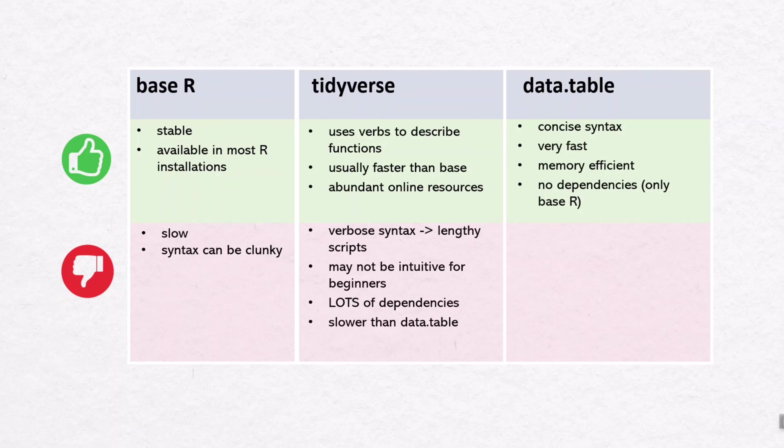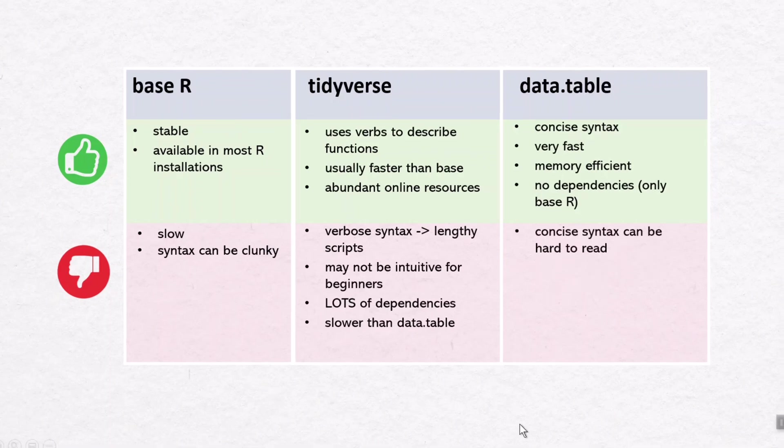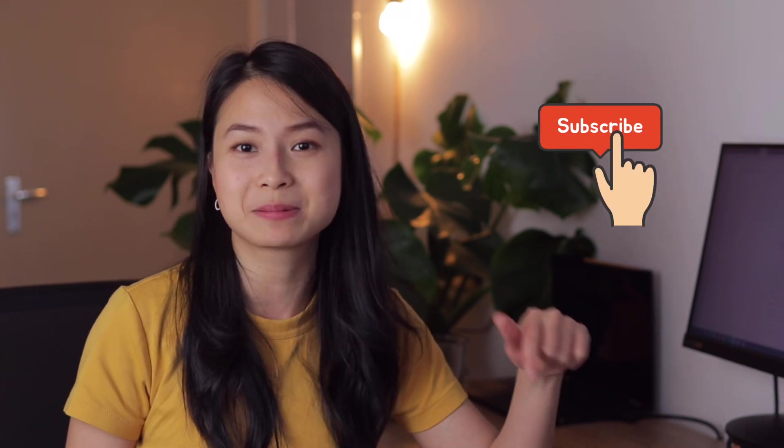Data.table is very concise in its syntax, very fast, memory efficient, and has no dependencies except base R. However, its concise syntax can be a bit hard to read and understand. I'll make an in-depth tutorial in a future video on data wrangling with data.table. But the bottom line is: no matter which library and syntax you adopt, it's good practice to stick to one of them in a single script to make your code easier for others to understand.